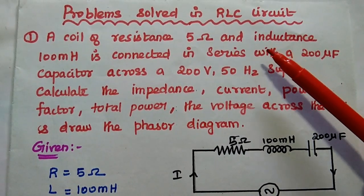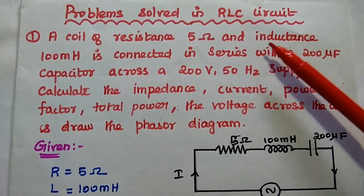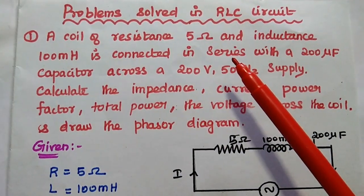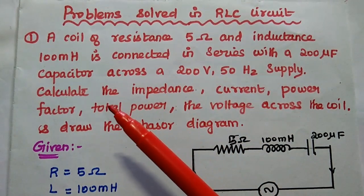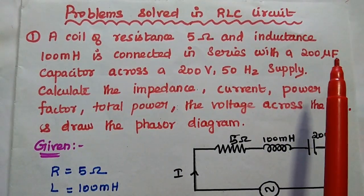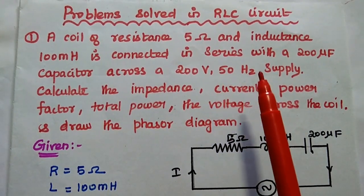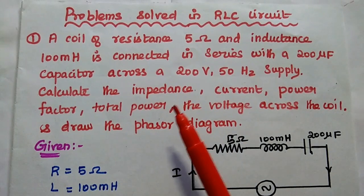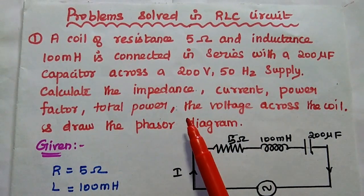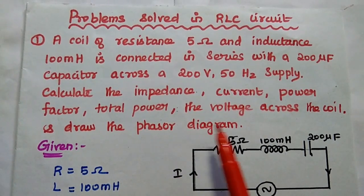Dear students, now we are going to solve one important problem in series RLC circuit. A coil of resistance 5 ohm and inductance 100 mH is connected in series with a 200 microfarad capacitor across a 200 volt 50 hertz supply. Calculate the impedance, current, power factor, total power, the voltage across the coil, and draw the phasor diagram.